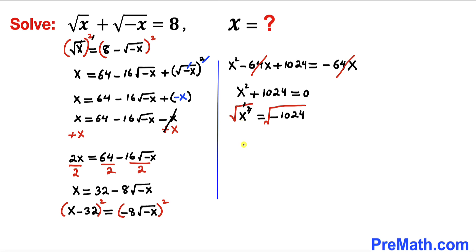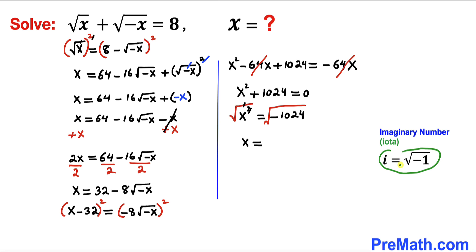This square and square root cancel out. So x turns out to be equal to — just keep in mind that i is always equal to square root of negative 1, where i stands for imaginary number, or sometimes we call it iota. So therefore the negative under the radical gives us an i on the right hand side.